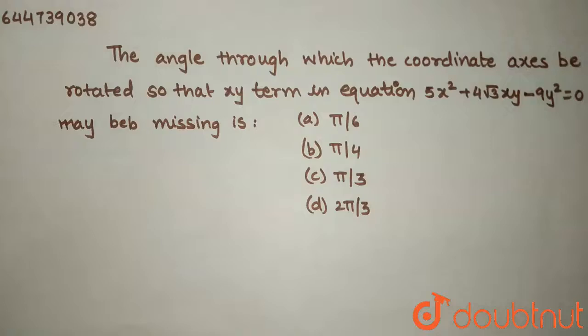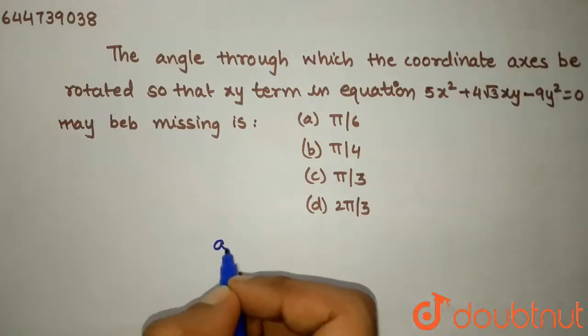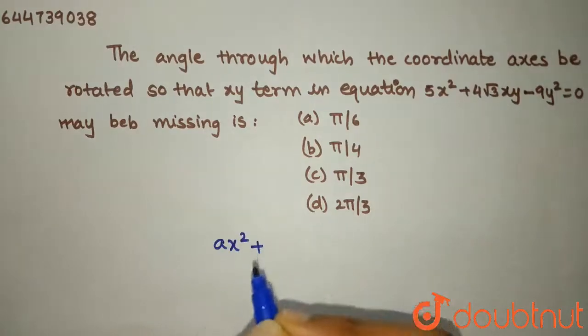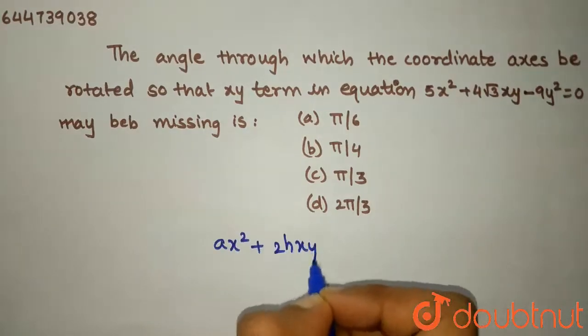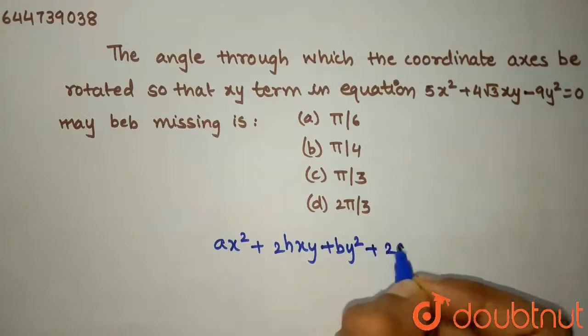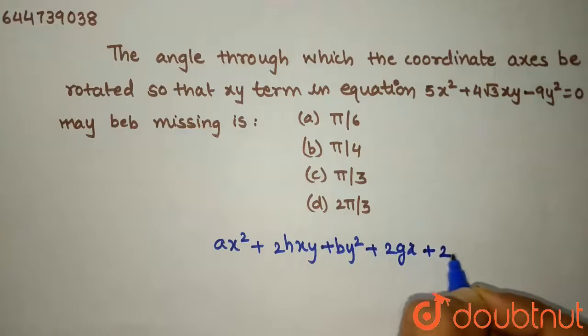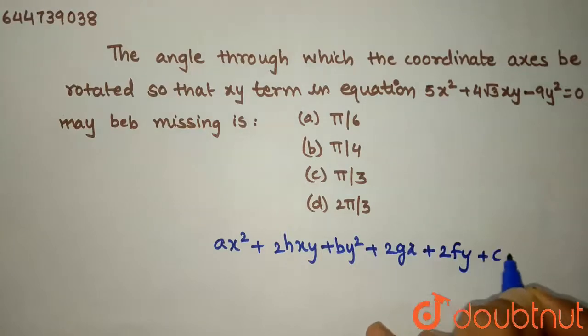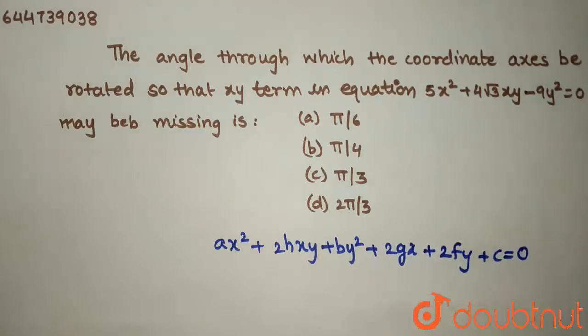So we know that the general equation is given by ax² + 2hxy + by² + 2gx + 2fy + c = 0, and tan 2θ is nothing but 2h upon a minus b.